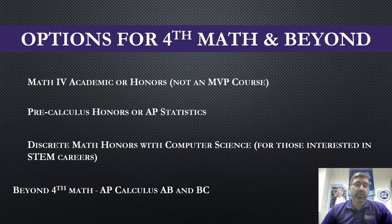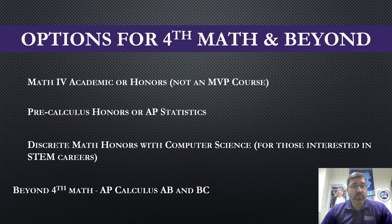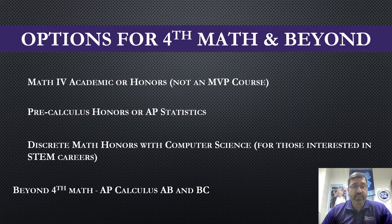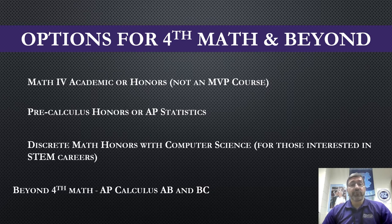There are a few different ways to get that fourth math credit. After Math 3, Math 4 Academic or Honors is available — unlike Math 1, 2, and 3, this is not set up as an MVP course. You may also take Pre-Calculus Honors, AP Statistics, or Discrete Math Honors with Computer Science, which is mostly intended for those interested in STEM careers. Beyond your fourth math, AP Calculus AB and BC are also available.